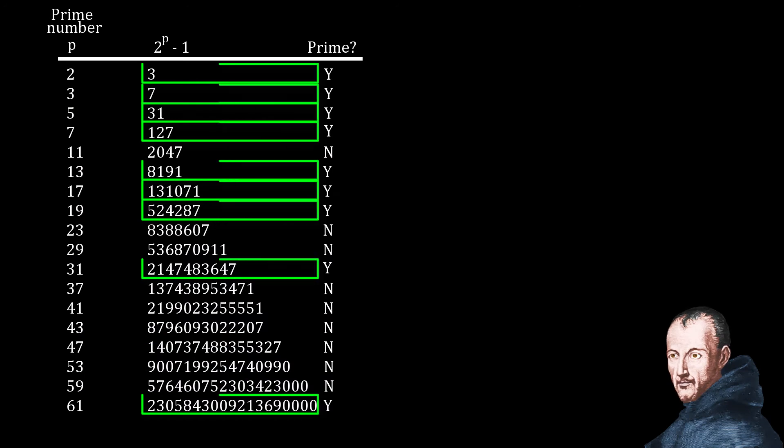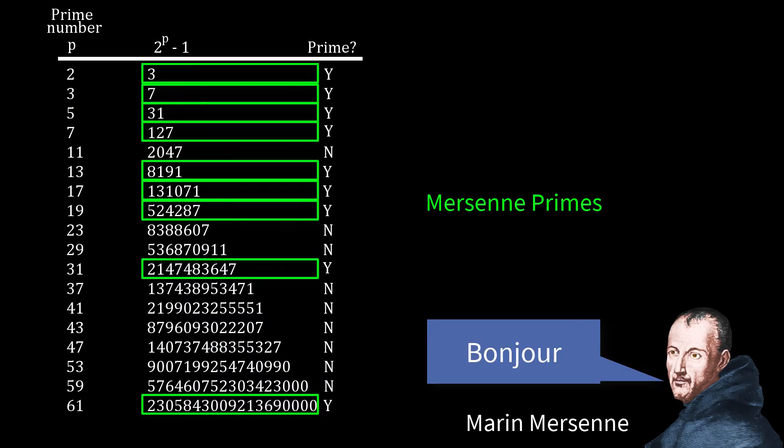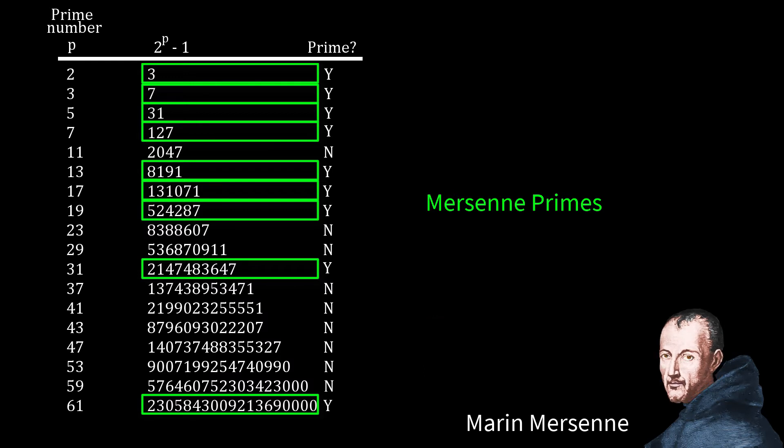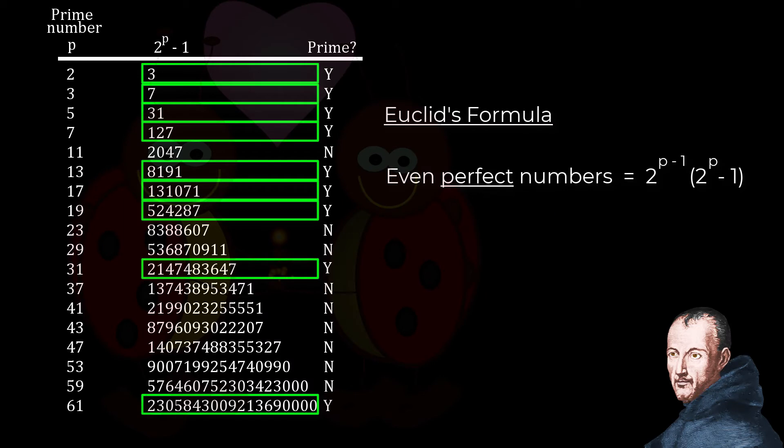The special primes generated from 2 to the power of p minus 1 are called Mersenne primes after the French priest and polymath Marin Mersenne who studied them in the 1600s. Every Mersenne prime is paired with a perfect number through Euclid's formula.